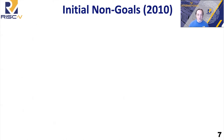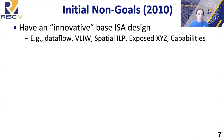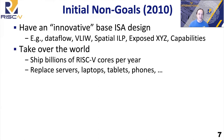We also had some non-goals back then — things we were not trying to do. We did not want to have an innovative base ISA design. There are a lot of interesting computer architecture ideas out there, but we were looking in a different space; we didn't want to spend all the time figuring out how to build a C compiler for a dataflow machine. We deliberately set out to create a pretty boring RISC design. It was also a non-goal to take over the world — we really were not thinking of shipping billions of RISC-V cores every year or replacing servers, laptops, tablets, and phones.